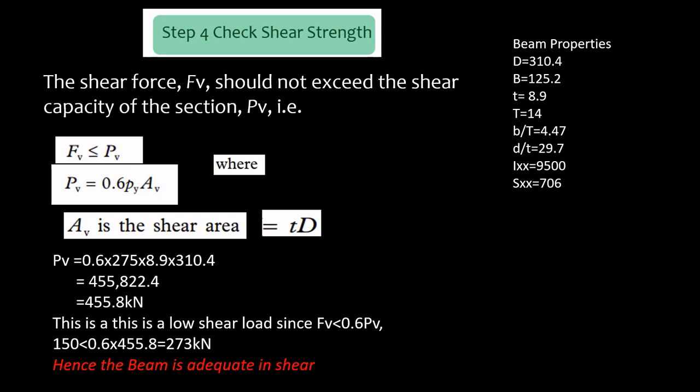If you do that you get 455,822 Newtons, so if you convert to kilonewtons it's 455.8 kN. Now if you do 60% of this shear capacity you will get 273 kN. 60% of our shear capacity and our shear force of 150 kN is less than 60% of the shear capacity, hence this load is a low shear load.